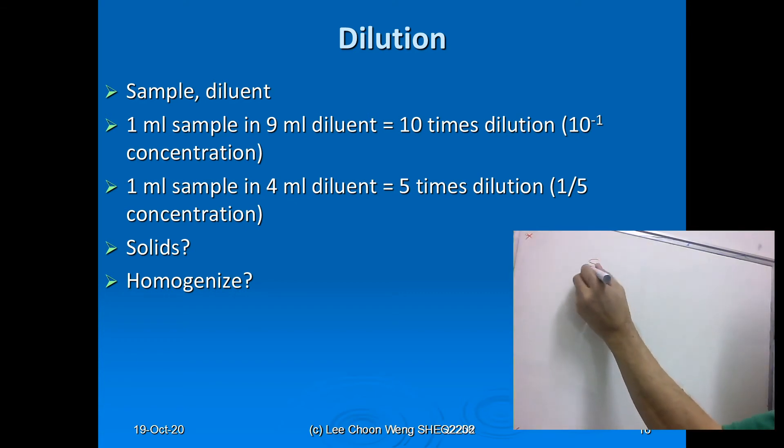Once you understand the concept of serial dilution, there is really no restriction to how much you dilute. So long as you know your calculations and the concept, you will be able to calculate back to the original sample. For example, if you put 1 ml sample to 4 ml of diluent, you can easily know this is one-fifth of the original concentration, and this is a 5 times dilution of the original sample.